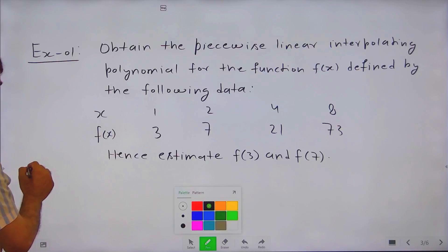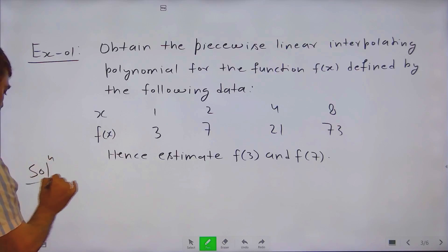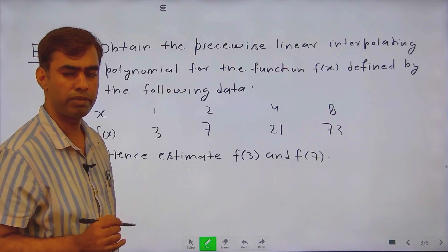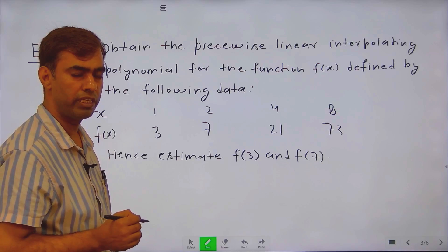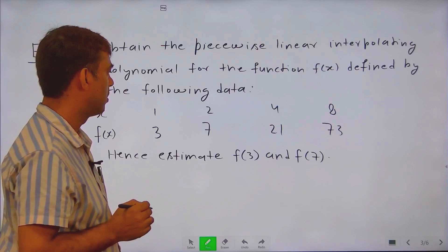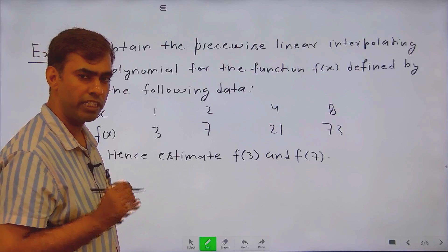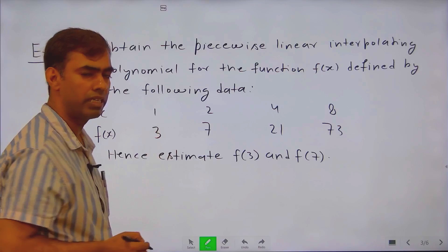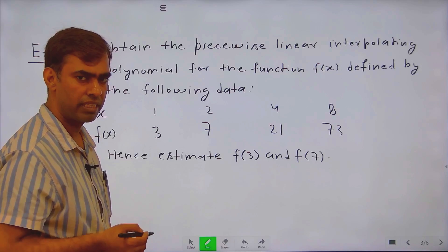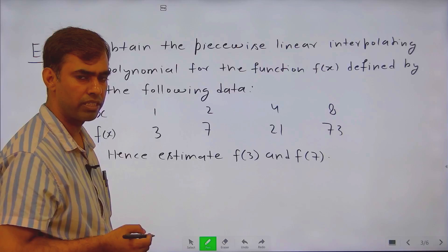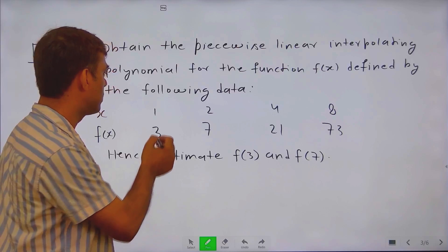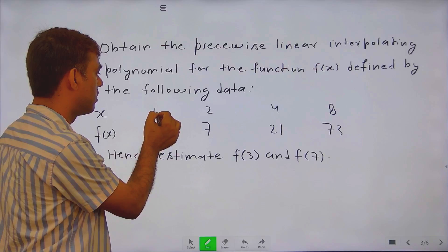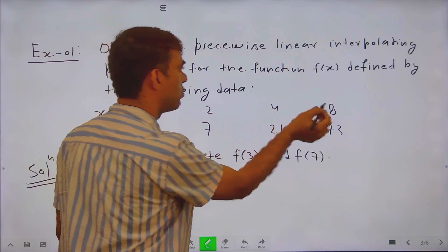If we closely observe the data, this data is given for unequal class intervals. So here we are going to use the interpolating formula for unequal class intervals. We cannot use forward interpolation, backward interpolation, or central interpolation formula for equal class intervals. Here we are going to use the Lagrange interpolation formula to fit a polynomial between 1 to 2, 2 to 4, and 4 to 8.